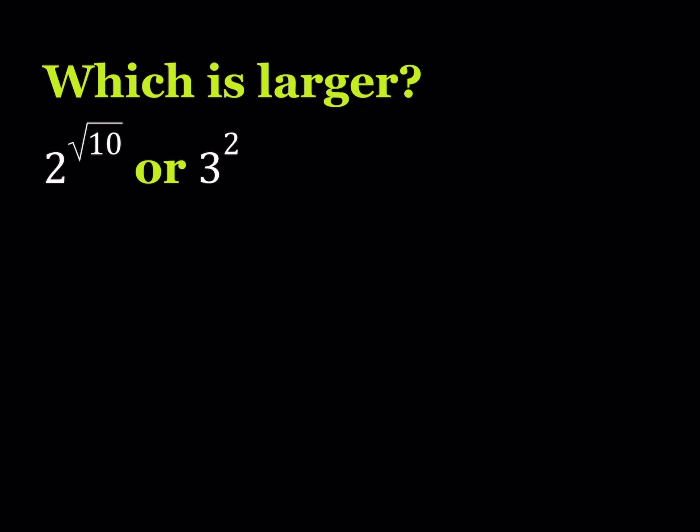I'd like to start with the square root of 10 and I want to be able to compare it to a rational number. For that purpose, let's observe the following. I can compare 10 to a fraction, and I want that fraction to be kind of square-rootable — a perfect square sort — so that I can take the square root of both sides. For this purpose, this number will be perfect: 10 is less than 361 over 36. Why? Because 360 divided by 36 is equal to 10, and this number is going to be slightly larger than 10.